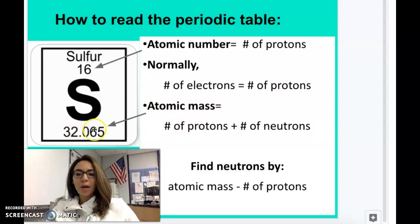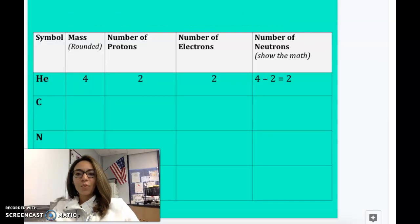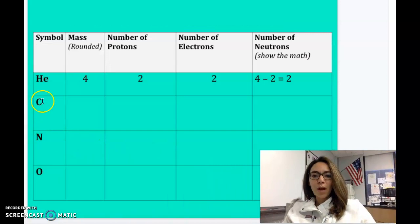The atomic mass at the bottom, this number, is the number of protons plus the number of neutrons in every atom. So in order to find the neutrons, we have to do a little math here. So you can take the atomic mass, this number, minus the number of protons, which is this number. So for sulfur, if we did 32 minus 16 equals 16, that is the number of neutrons in an atom of sulfur. So why don't you pause the video and give your practice a try.